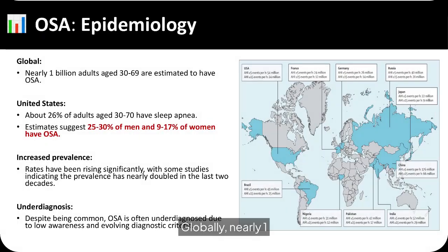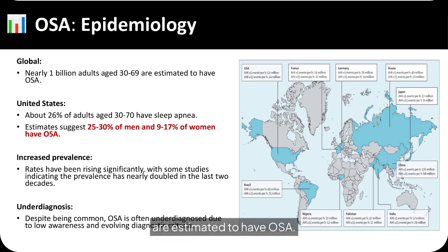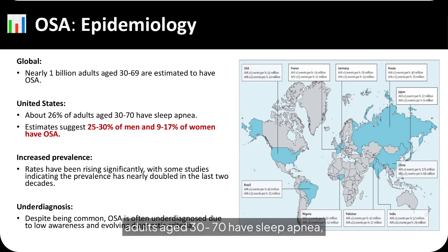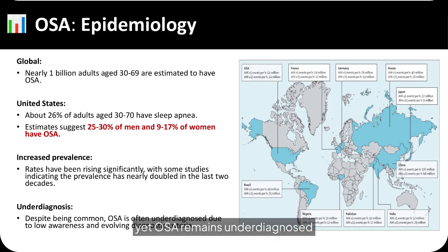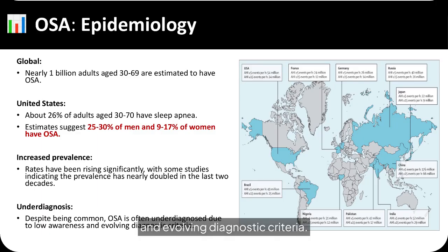Globally, nearly 1 billion adults aged 30 to 69 are estimated to have OSA. In the U.S., about 26% of adults aged 30 to 70 have sleep apnea, with 25 to 30% of men and 9 to 17% of women affected. Prevalence rates are rising, yet OSA remains underdiagnosed due to low awareness and evolving diagnostic criteria.